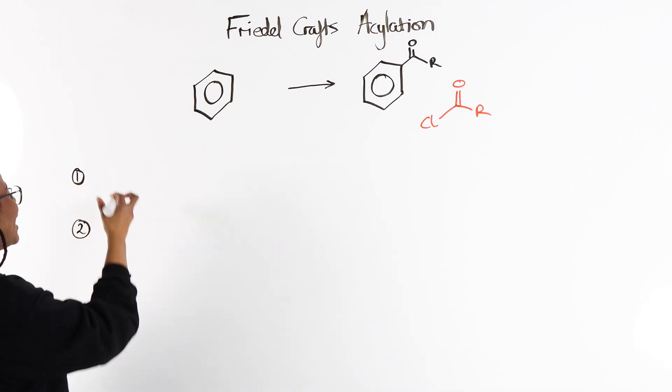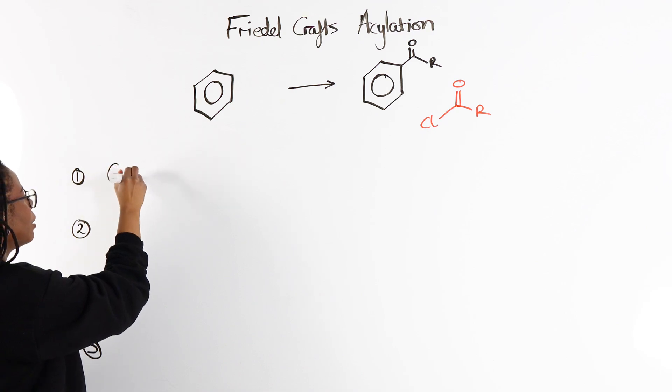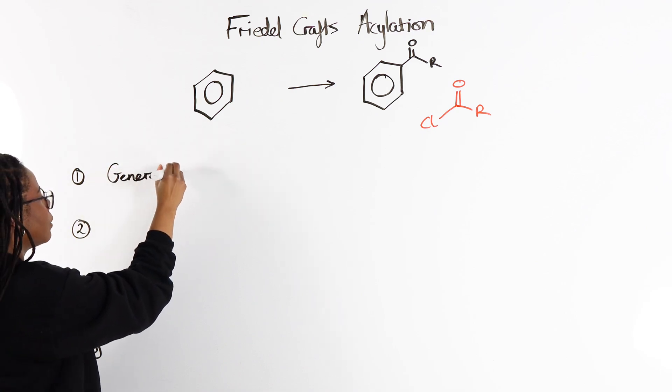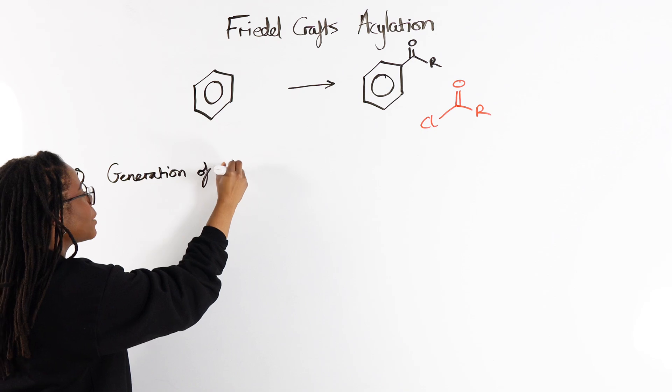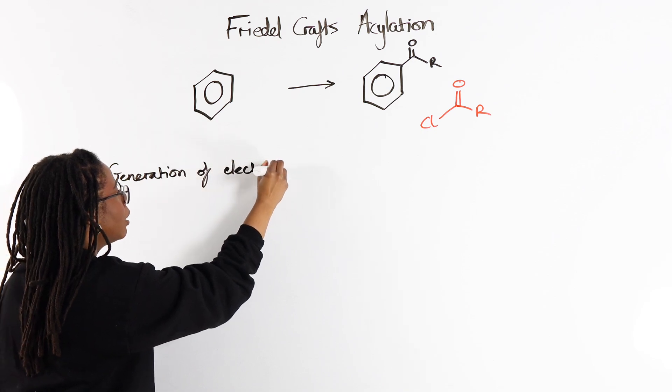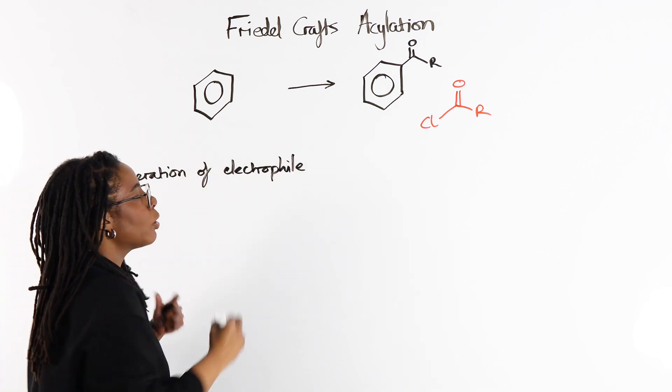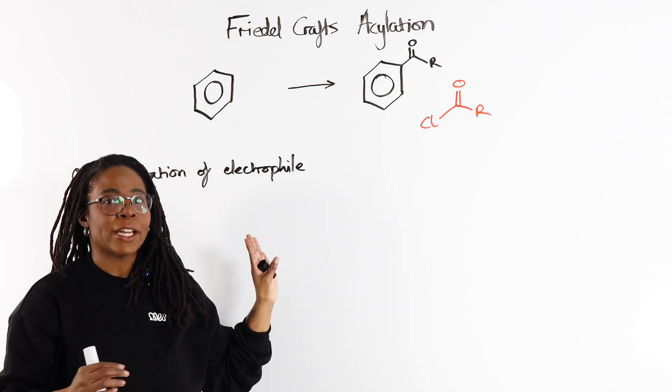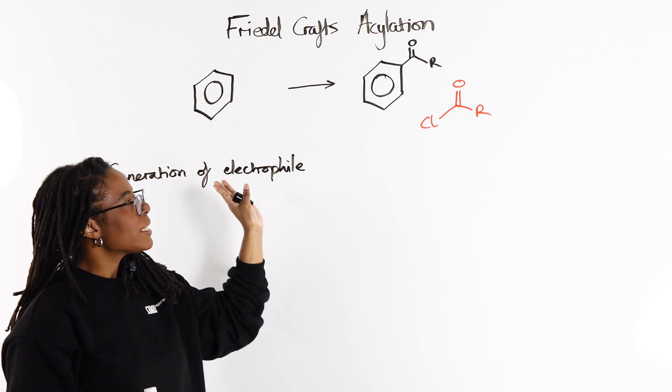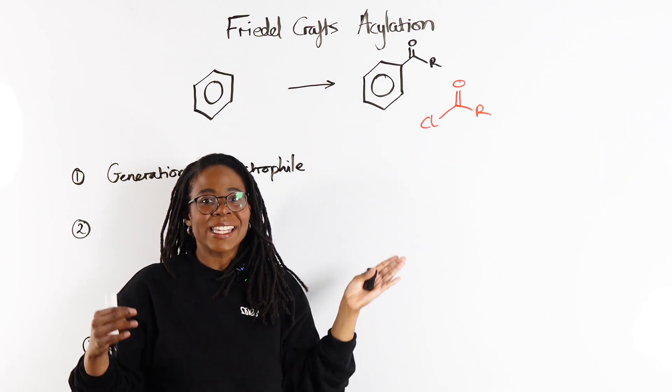Part one is generation of the electrophile. And that's because, as we know, due to the delocalization of the pi electrons, we are not going to get direct attack of this neutral electrophile. Instead,